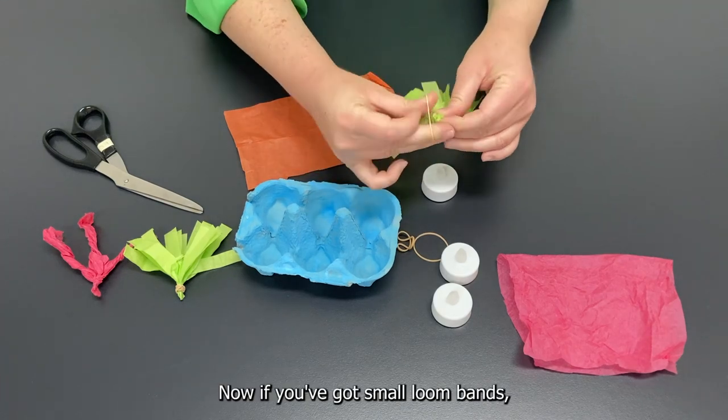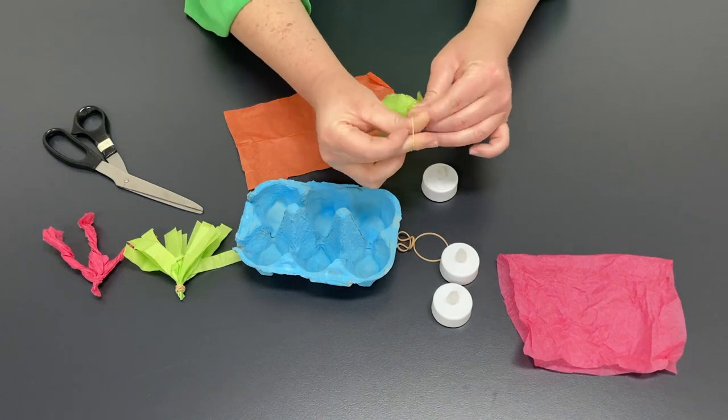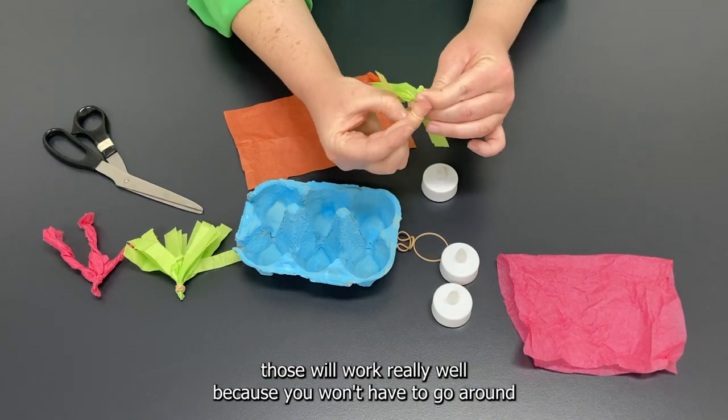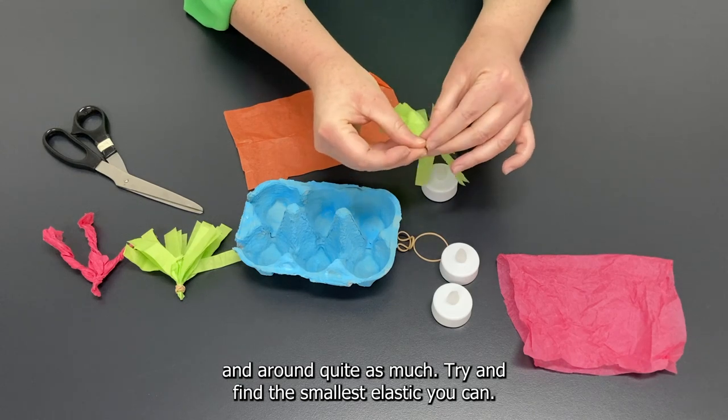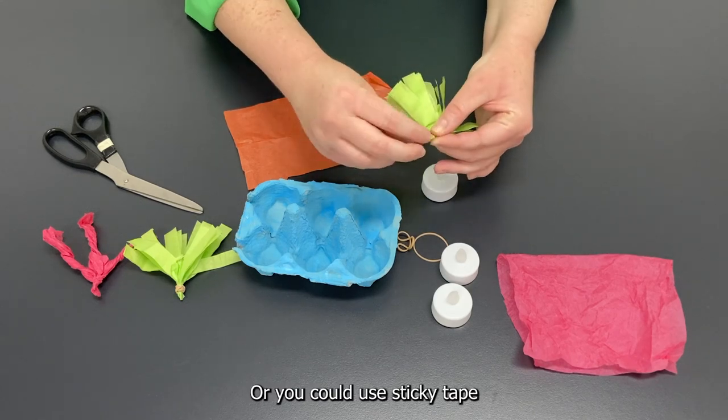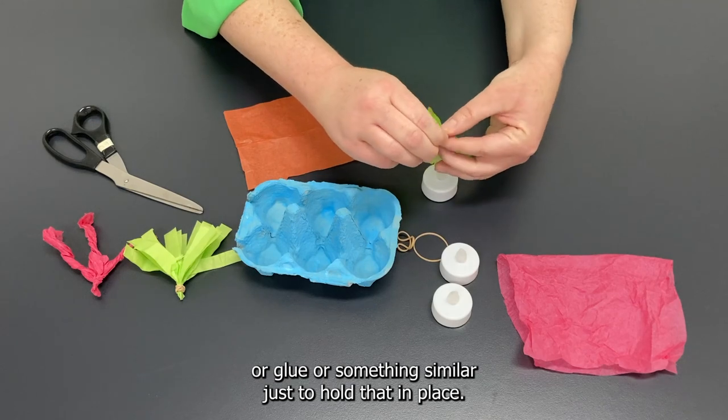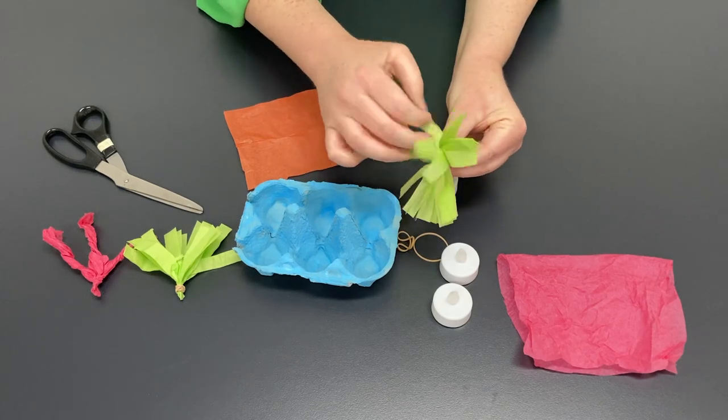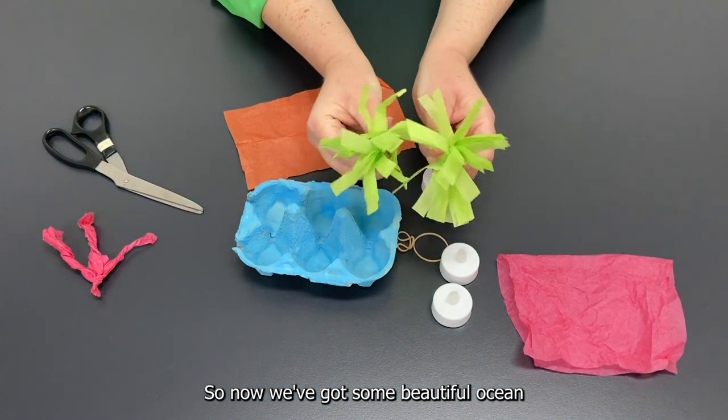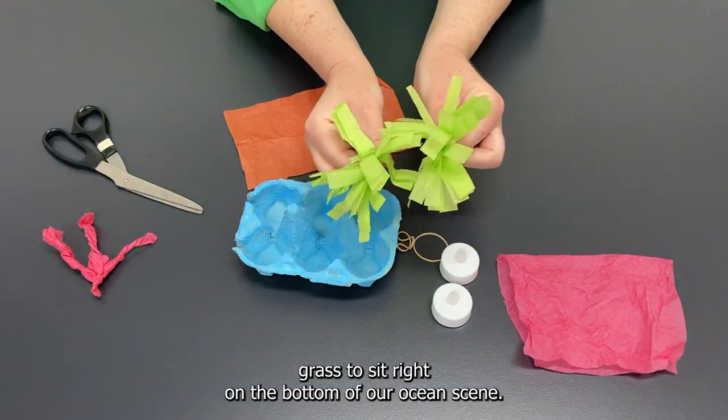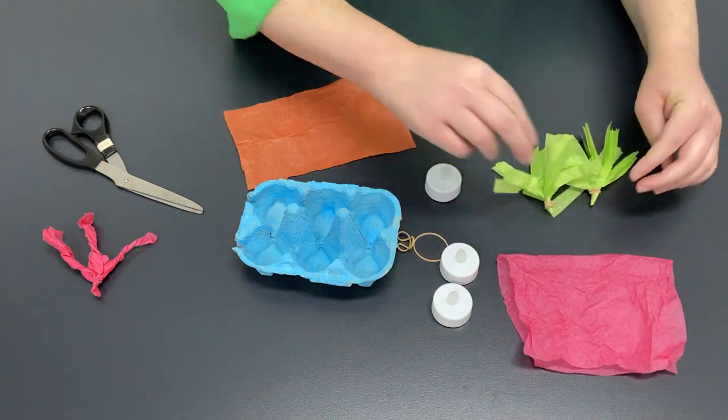Now if you've got small loom bands those will work really well because you won't have to go around and around quite as much. Try and find the smallest elastic you can or you could use sticky tape or glue or something similar just to hold that in place. So now we've got some beautiful ocean grass to sit right on the bottom of our ocean scene.